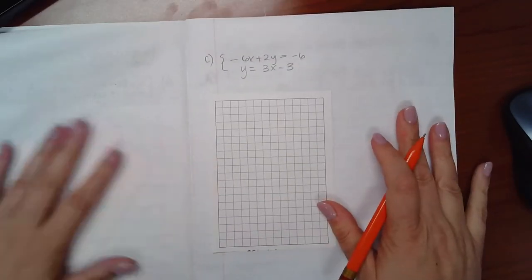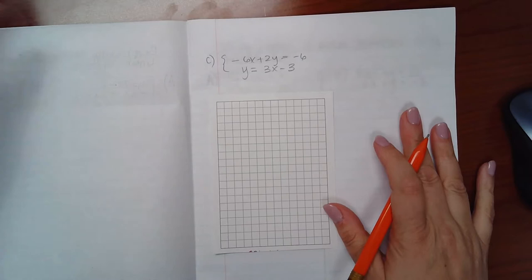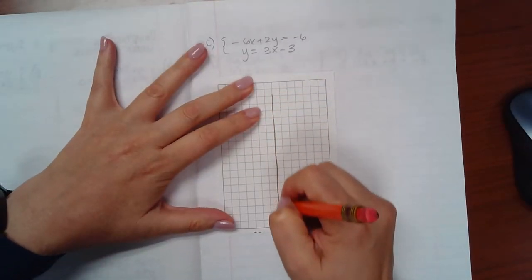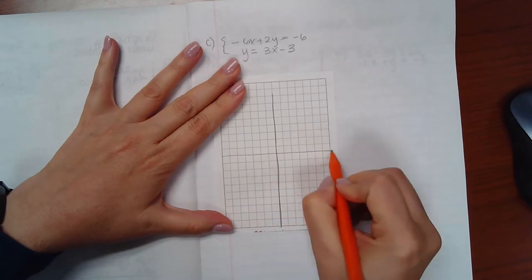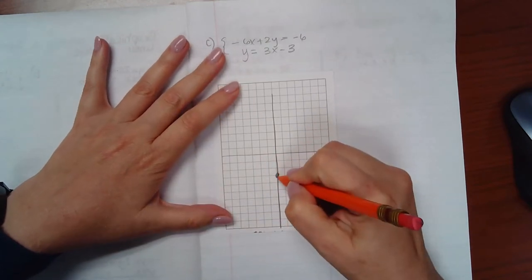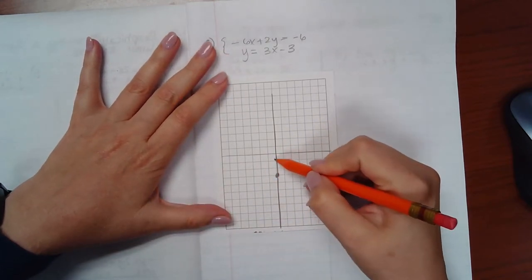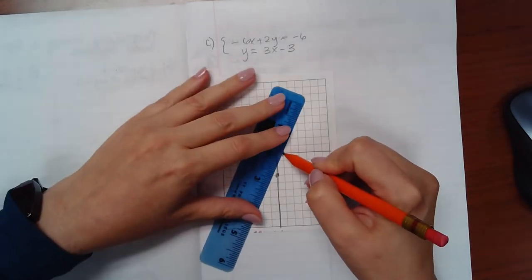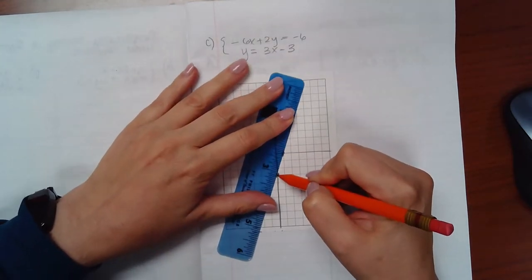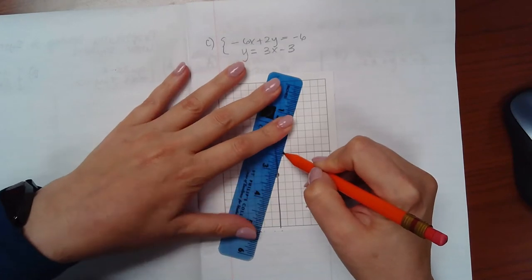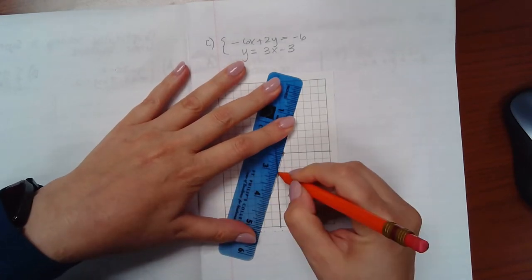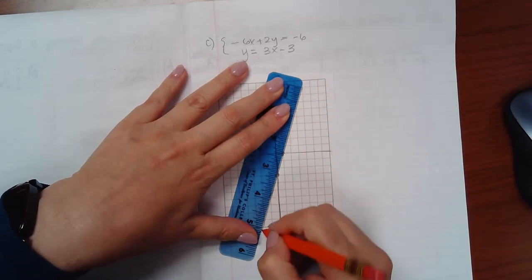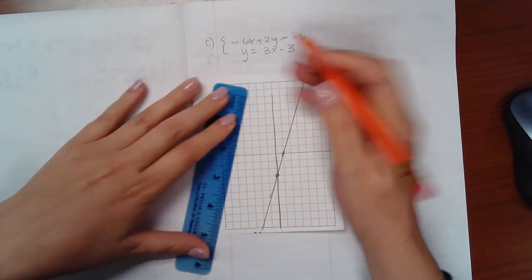Here's a third example, same method, graphically solving the system. So the bottom one I can graph pretty easily. Start off at negative 3, y-intercept, and then go up 3 and over 1 to get the next point. And then if I draw this in correctly, we get a line that goes in this direction.